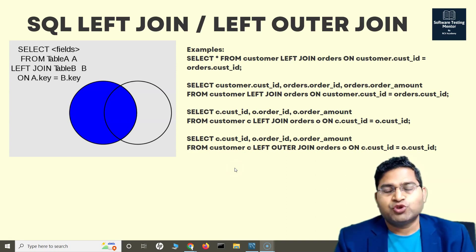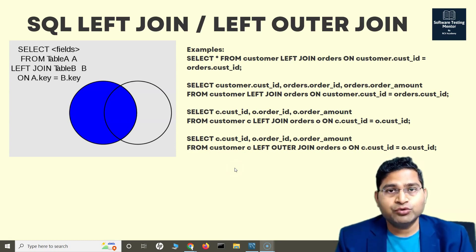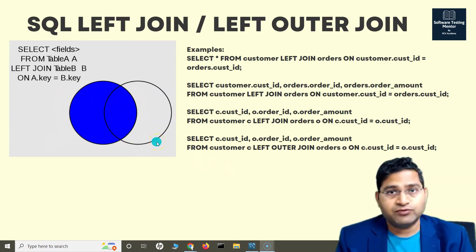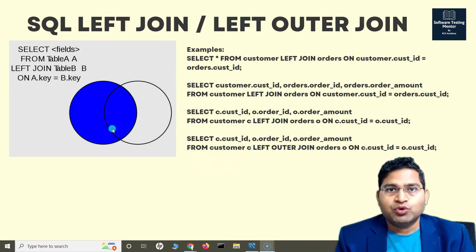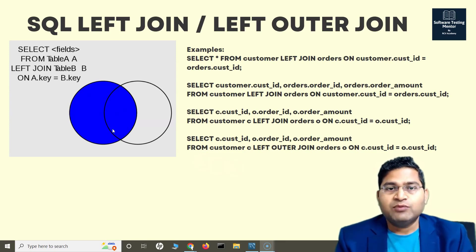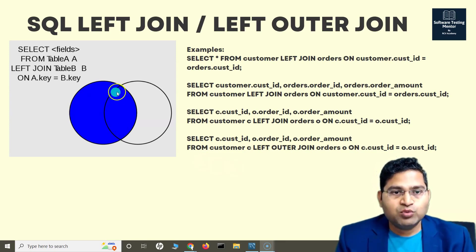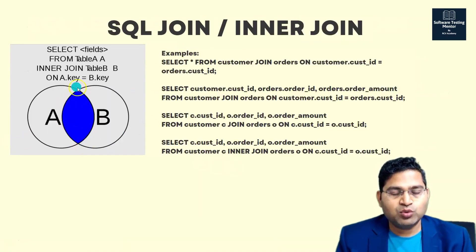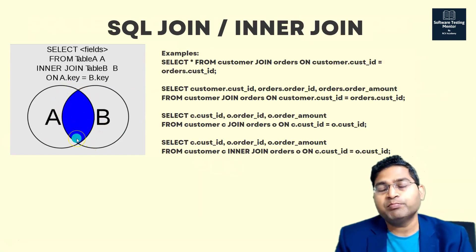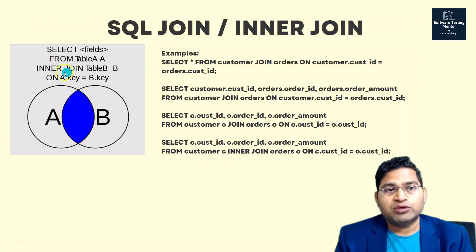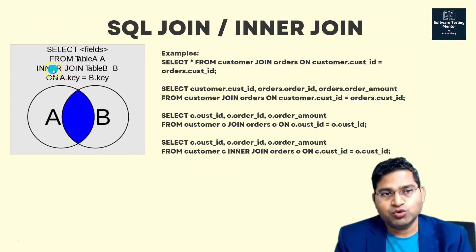So what is left join? As we have understood about the inner join, what it used to do is if there are two tables A and B, or customer and order, as we took in the previous tutorial, if I want to get the common data out of both the tables that match in both the tables with some criteria, then we use inner join and inner join will get me that inner portion. So inner join will get me the common data between table A and B, and the keyword for inner join was inner join or simply just join.